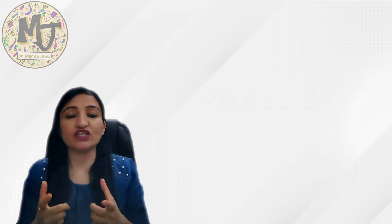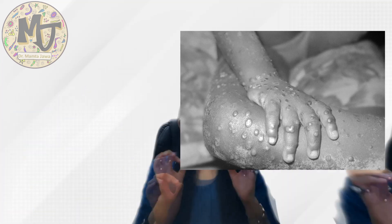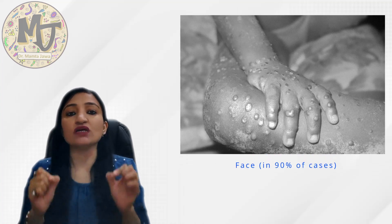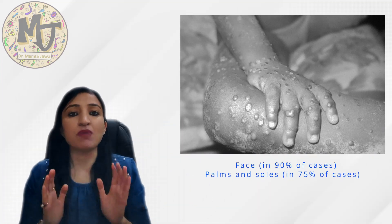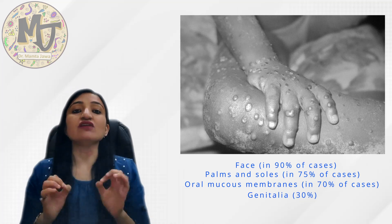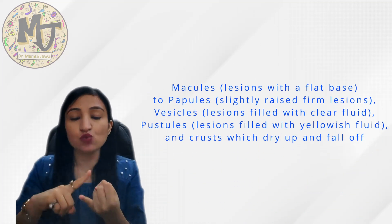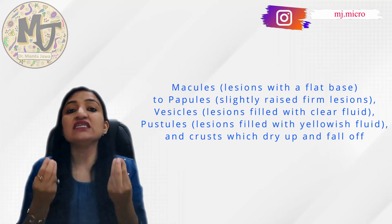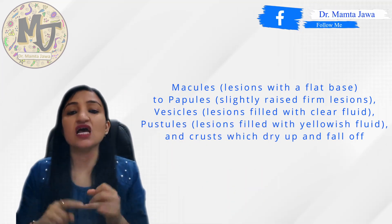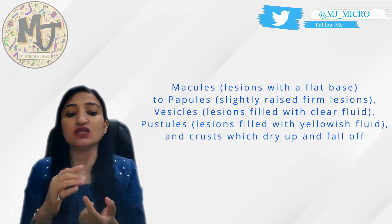After the prodromal period, the patient begins to develop a rash. The skin rash usually appears within 1 to 3 days of fever and tends to be more concentrated on the face and extremities rather than the trunk. About 90% of individuals have a facial rash, 75% have a rash on palms and soles, oral mucosal rash is seen in 70% of cases, genital rash in 30%, and conjunctival rash in 20%. The rash sequentially evolves from macule to papule to vesicle to pustule, and finally scab formation occurs. These scabs eventually dry up and fall off. The number of skin lesions can vary from a few to several thousands, and sometimes intensely large areas of skin can be involved, coalesce together, and that involved skin could just slough off.